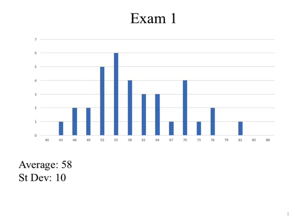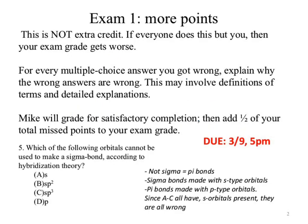Don't work in your head — write it down. Yes, that takes time, but it improves your score. As I read through this question, 'which of the following orbitals cannot' — we have a 'not.' Negatives are always fun and I usually try to highlight those. This time I missed it. 'Cannot be used to make a sigma bond according to hybridization theory.'